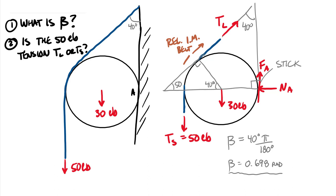Those are really the two most challenging things on flexible belt problems: figuring out the angle beta and figuring out which tension is T sub L and which is T sub S. After you have those, you use the free body diagram equation plus the belt friction equation to solve for whatever is unknown. Let's go ahead and roll an example problem into this video to keep it all in one place.